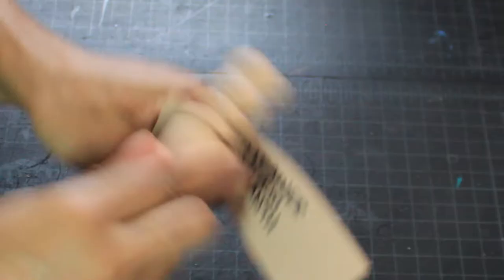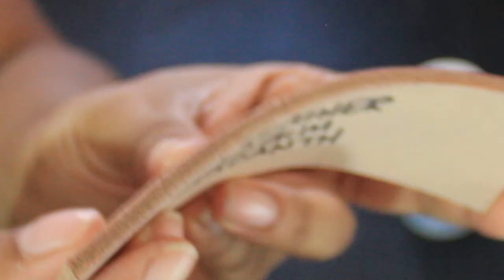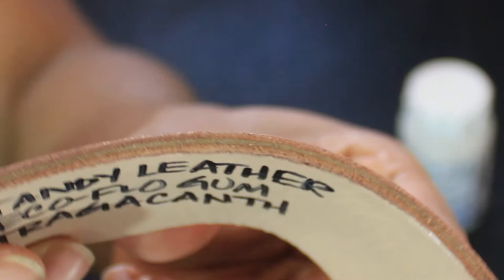Use the burnisher tool on the edge to buff away the excess fibers. Apply the product with a q-tip, cotton dauber, or even your finger. Allow it to dry and then use the burnisher tool or slicker to slick the edge. This seals the edge and gives it a low sheen gloss. Here I'm showing you the difference between a burnished edge and an unburnished edge.